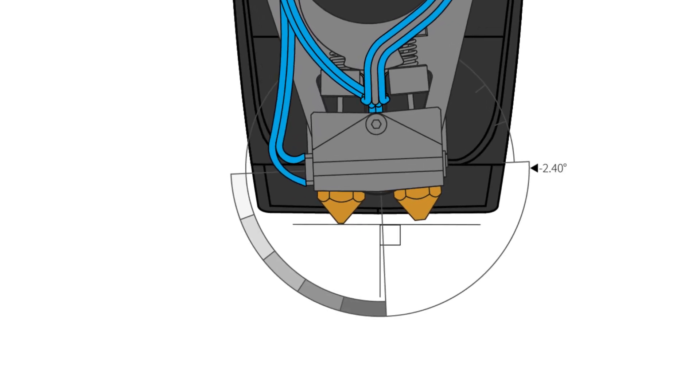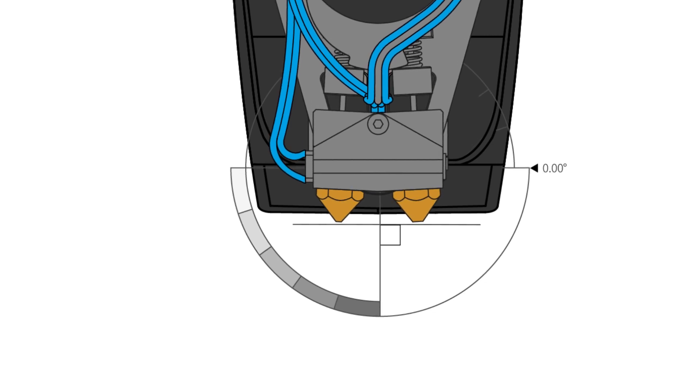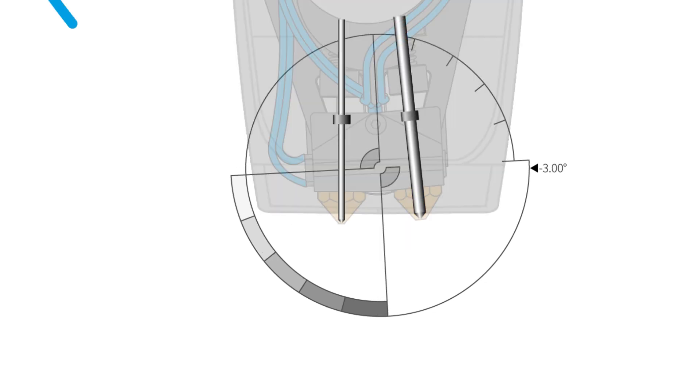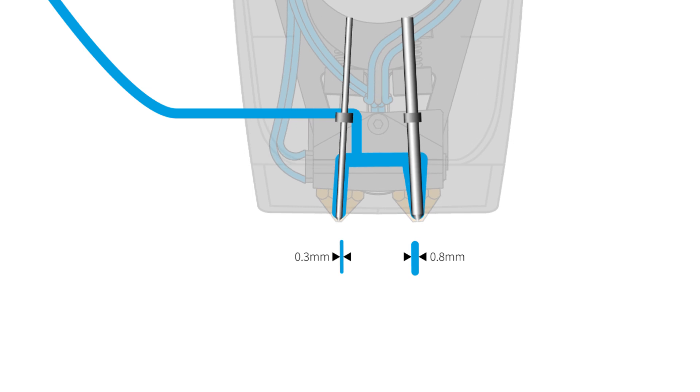The smaller 0.3mm nozzle produces excellent small details and a great finish when models are sliced into fine layers. The 0.8mm nozzle can produce a 1mm wall thickness in one pass, three times faster than a smaller nozzle.